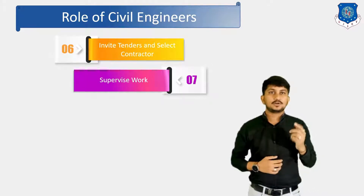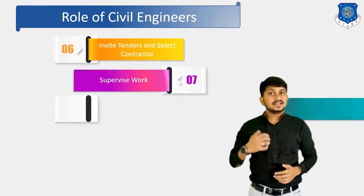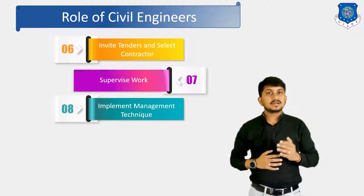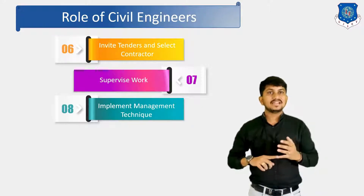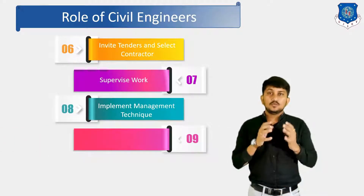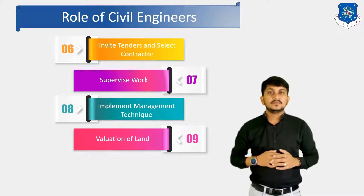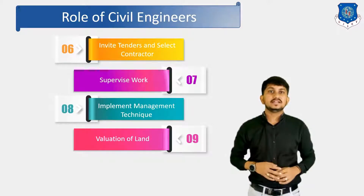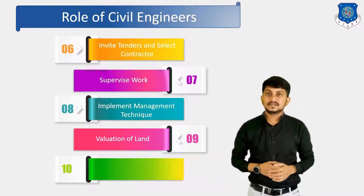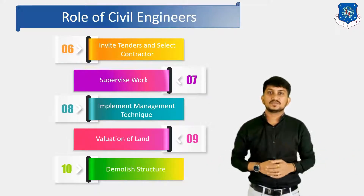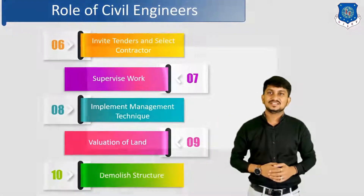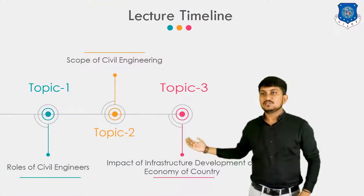Next is to invite tenders and select contractors. Then the civil engineer has to supervise work during execution and ensure progress of the work. Next is to implement management techniques for better management of man, material, machine, and money. Next is to carry out valuation of land for the purpose of finding its sale or purchase price.